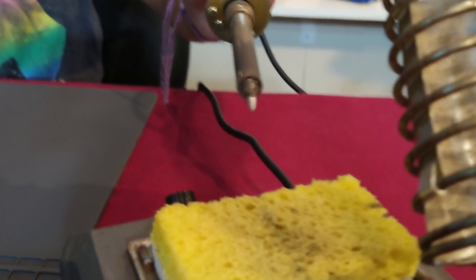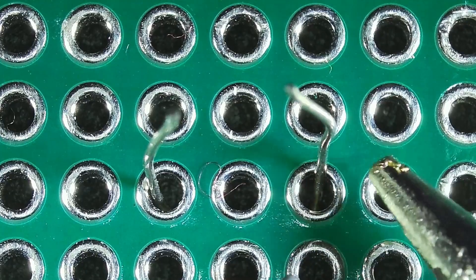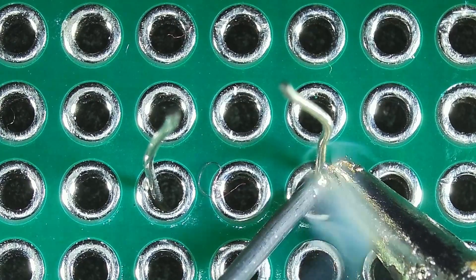Flip the board over, clean the iron tip, and begin heating up the part you're going to solder.